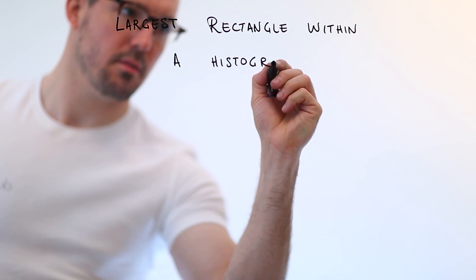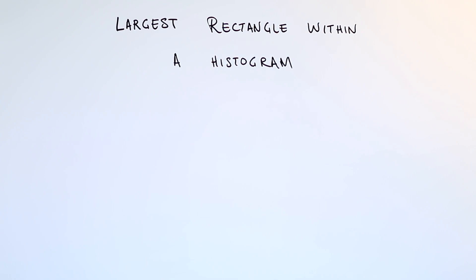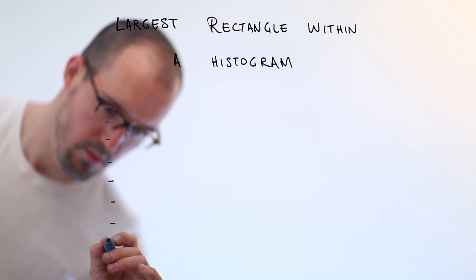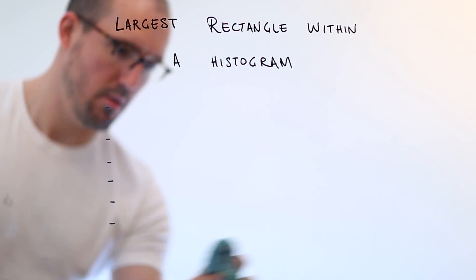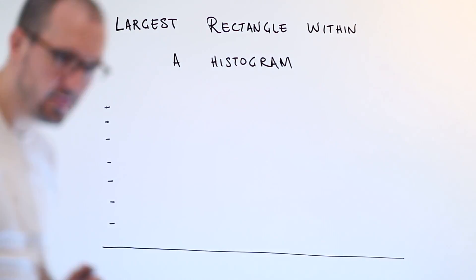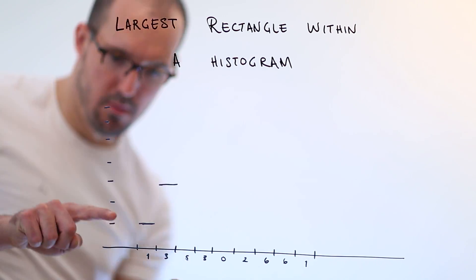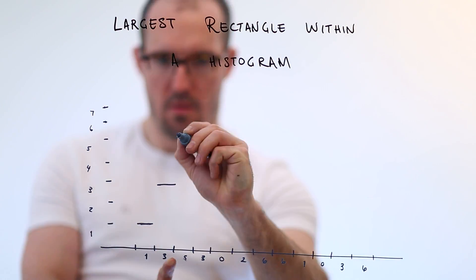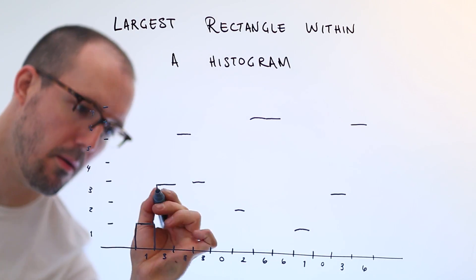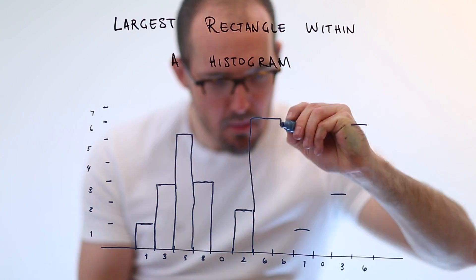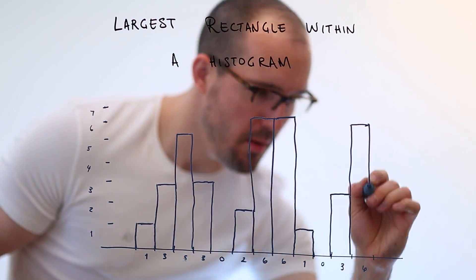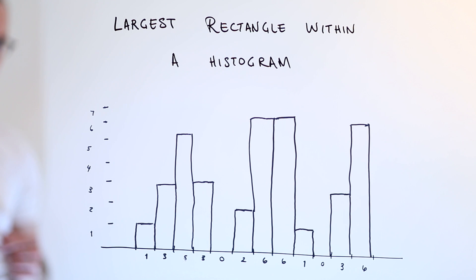While this problem is not super algorithmically complex, the optimal solution to it is more surprising than you might expect. So what do we mean when we say a histogram? This is something not everybody even knows about. A histogram basically is an x and a y axis where for every x you have some y value, and for this problem we're going to assume that all of those y values are positive integers.